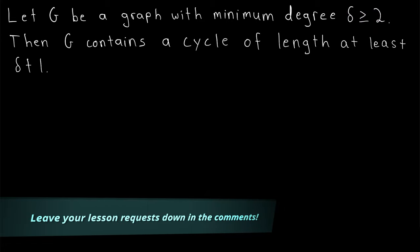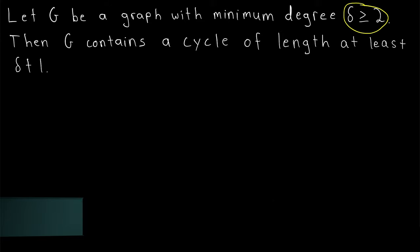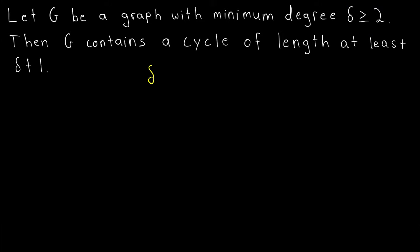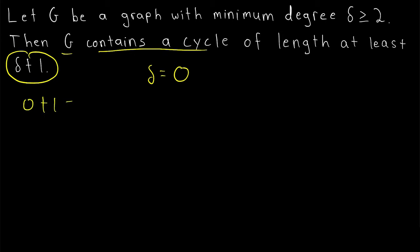Let's quickly see why this result doesn't hold for minimum degrees less than 2. If a graph has minimum degree 0, then this result would state that G must contain a cycle of length at least 0 plus 1, or 1. Now, the minimum length of a cycle is 3, so we're certainly not going to have a cycle of length 1. An example of a graph with minimum degree 0 and no cycle would be the complete graph on a single vertex — the trivial graph.